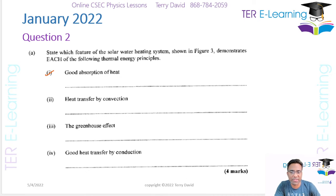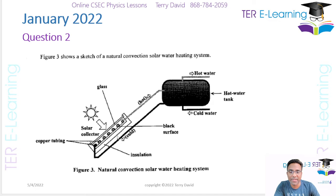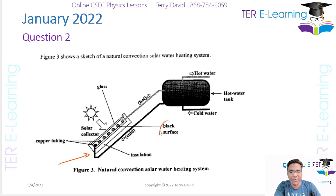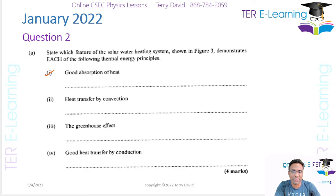The first one: good absorption of heat. In the design of a solar water heater, we have a collector that collects all of the thermal energy. If you notice, there is a black surface — black surfaces are good absorbers of thermal energy — so the black surface is the answer for this part.